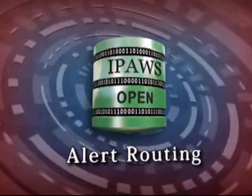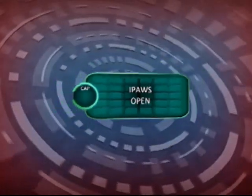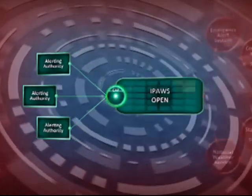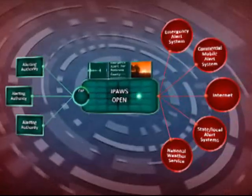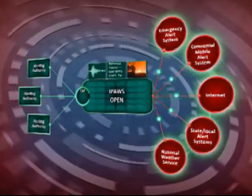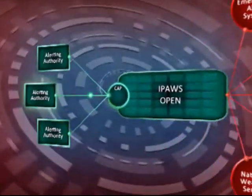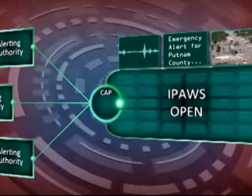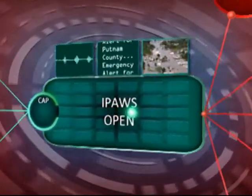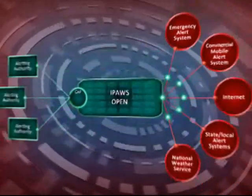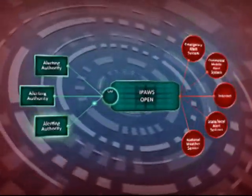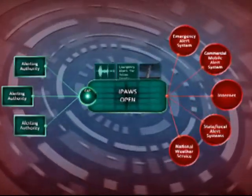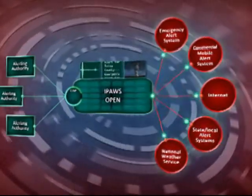How is an alert routed by IPAWS Open? Once the alert is received from the alerting authorities, IPAWS Open authenticates the source and validates that the alert input conforms to the Common Alerting Protocol standard and IPAWS profile. This provides a standard for everyone across all levels of government as well as the private sector. While older systems relied on audio and text-only systems, IPAWS Open makes picture and video feeds possible and allows for the seamless incorporation of emerging technologies. Once the alert message has been authenticated by IPAWS Open, the message is simultaneously delivered to all IPAWS compliant public alerting systems.